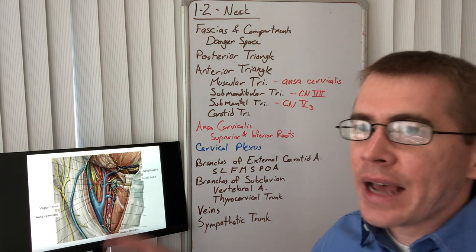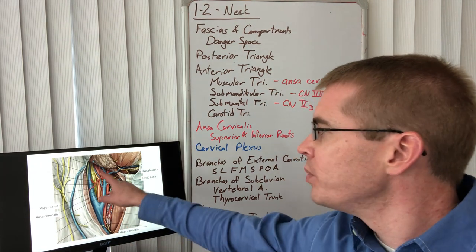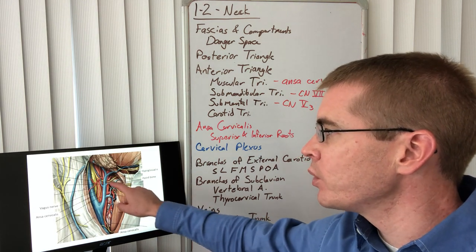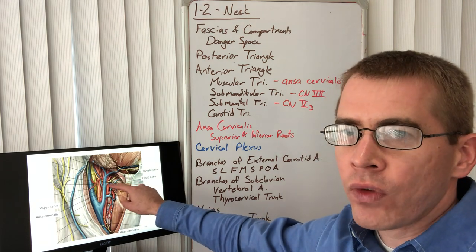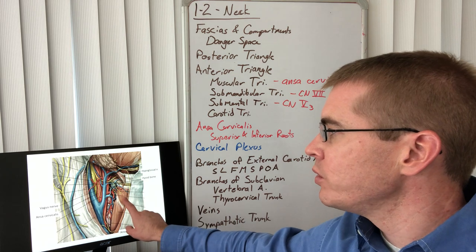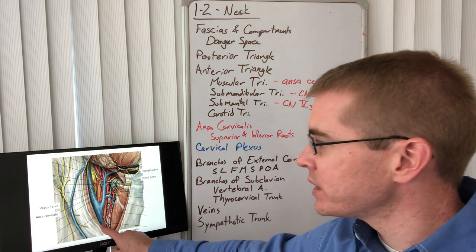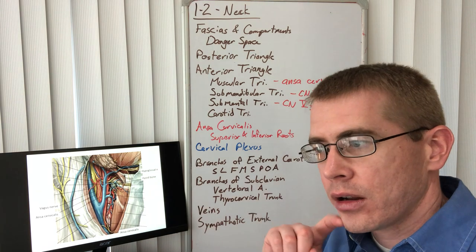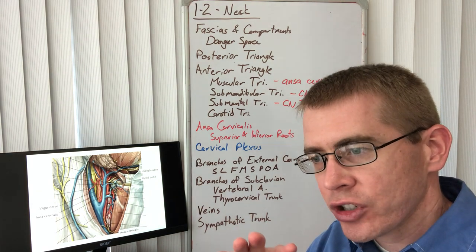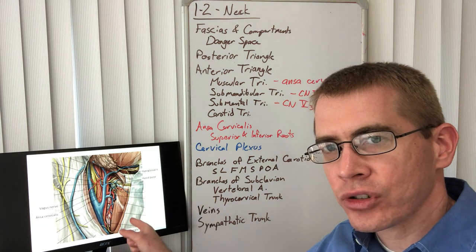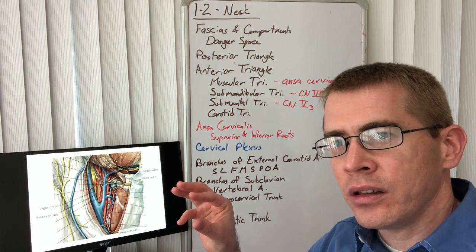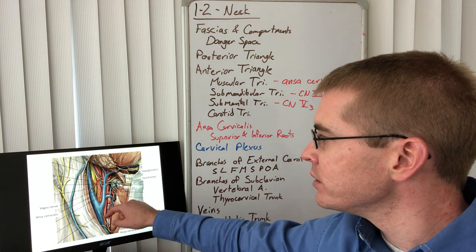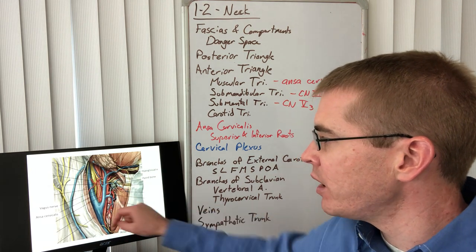In dissection, we'll open the carotid triangle to find the hypoglossal nerve — our main landmark — next to the hyoid bone. Following the hypoglossal nerve, we'll find the branching of C1 to the thyrohyoid muscle. Ansa cervicalis loops around on the surface of the carotid sheath, so we must identify and separate it first before cutting the carotid sheath to access structures like the vagus nerve and other components of ansa cervicalis.